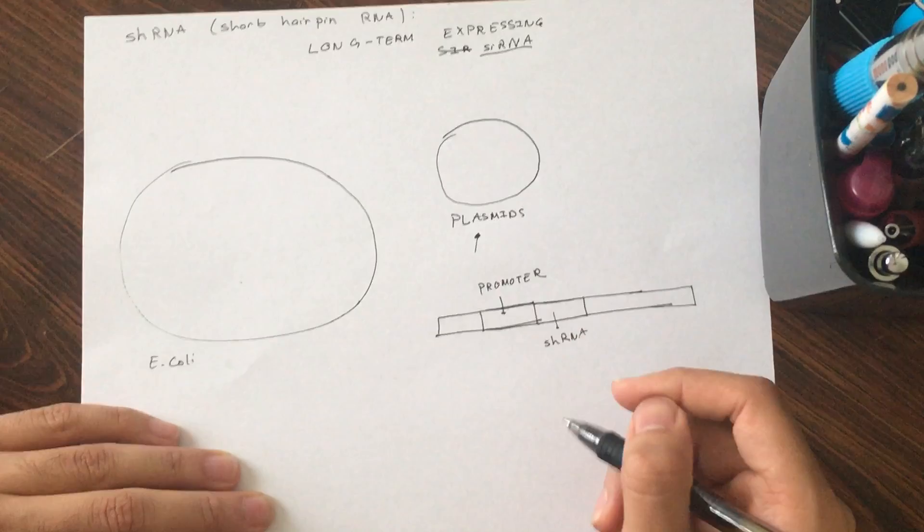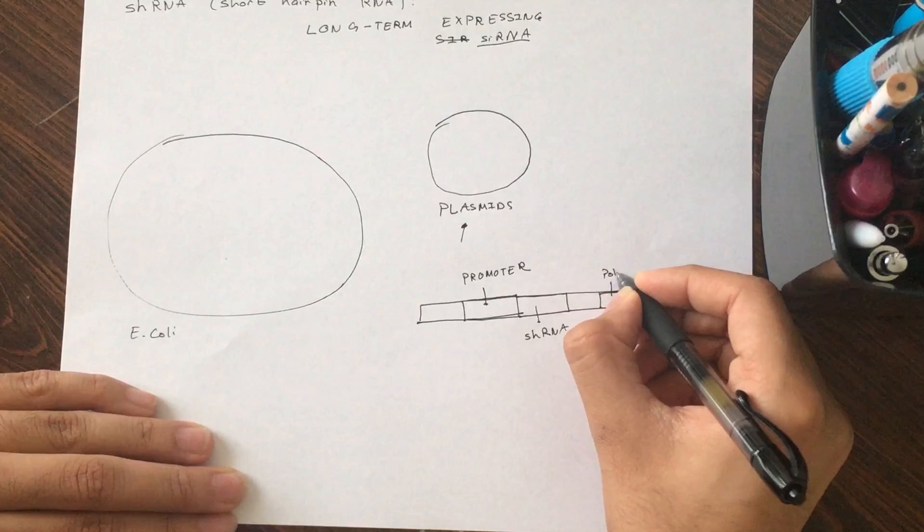So just follow with me. You have a promoter that codes for this short hairpin RNA which is used for expressing long-term siRNA. So then you'll have the poly-A tail.